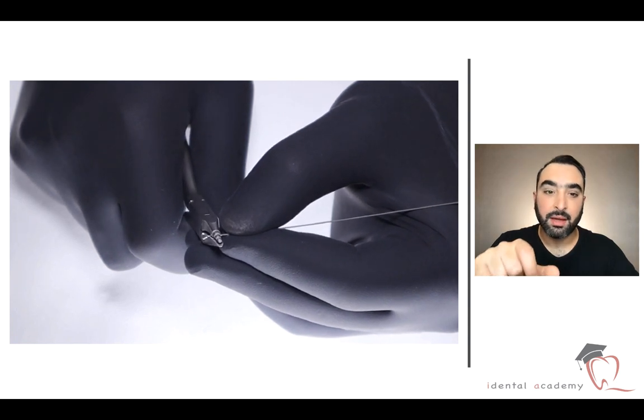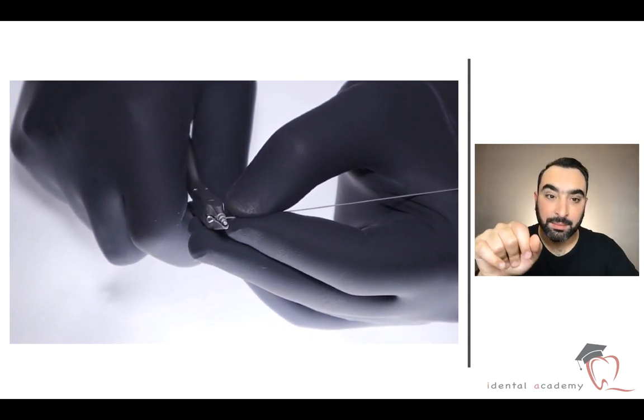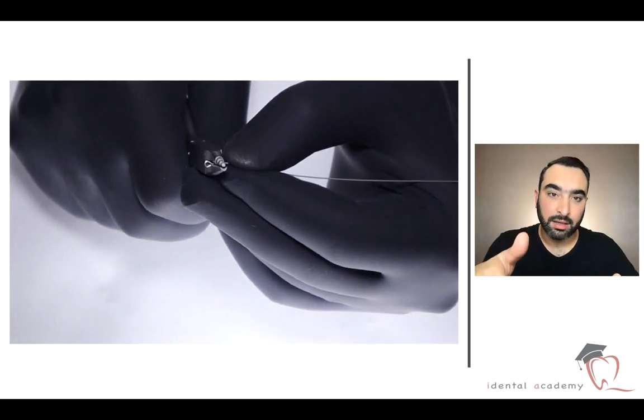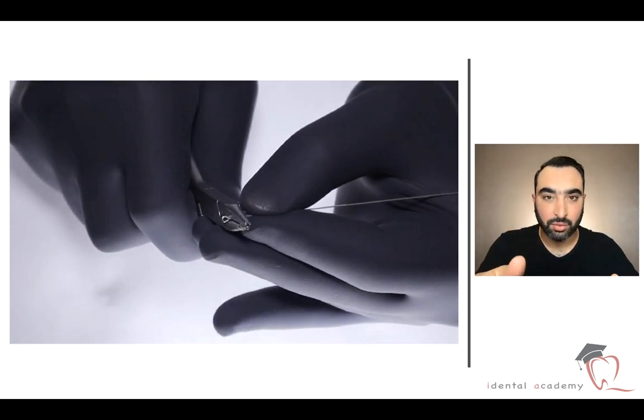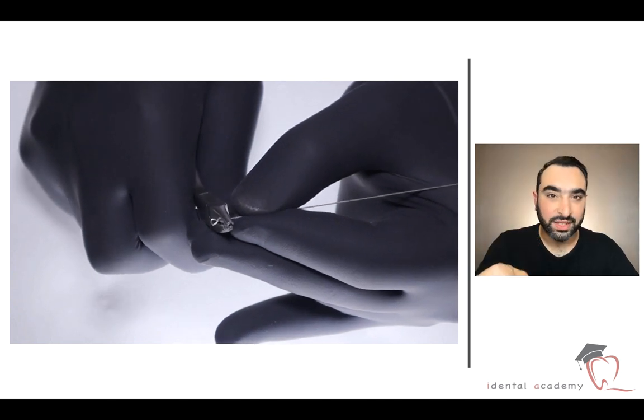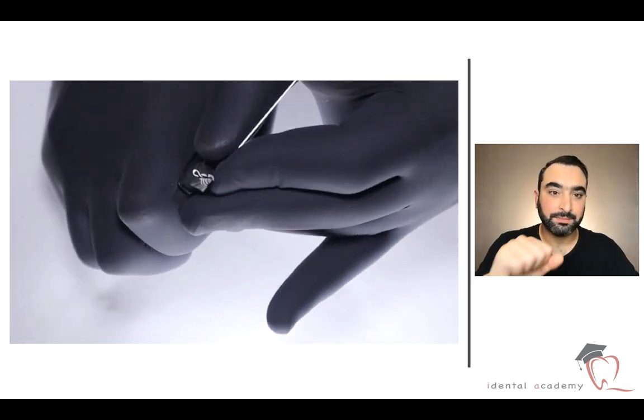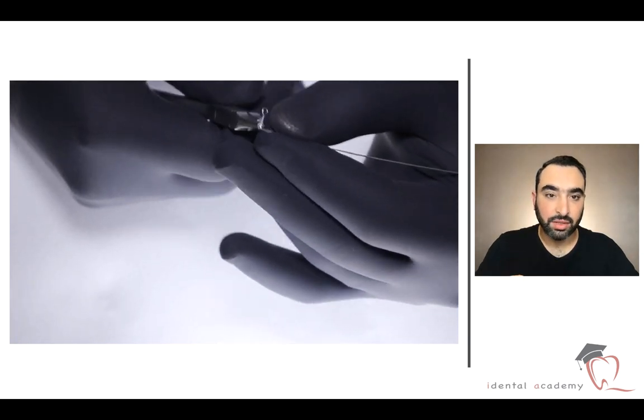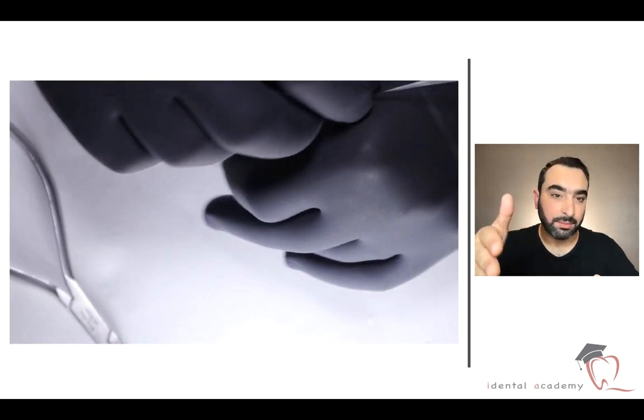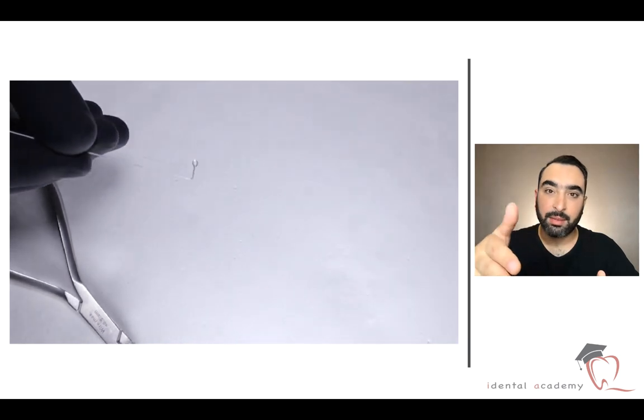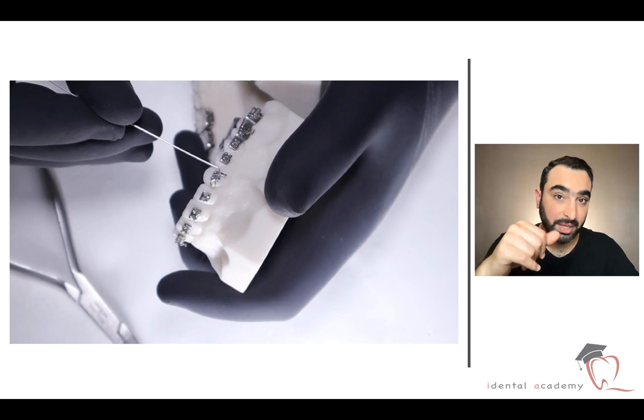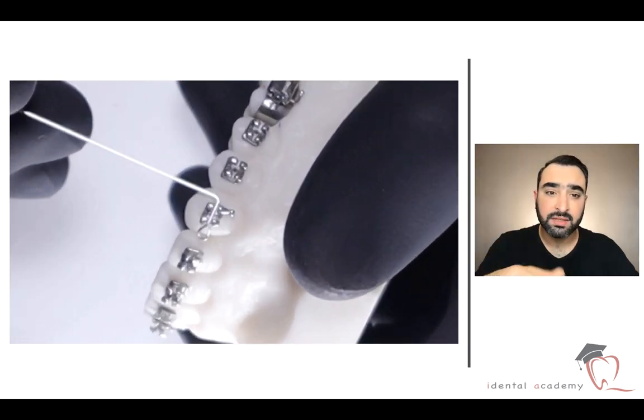After that we have to measure the width of the part that will be inside the bracket. For sure it must be similar to the bracket or maybe a little bit wider to put it inside easily. After that we have to be sure that everything is okay. So we will put the wire on the mouth or maybe you can use the cast if you don't like to make your wire while the patient is inside the clinic.